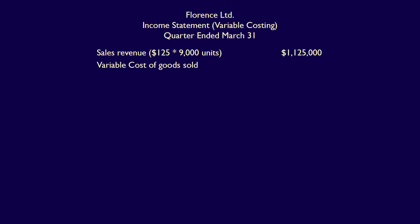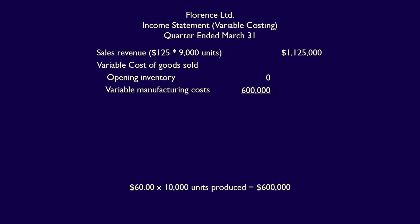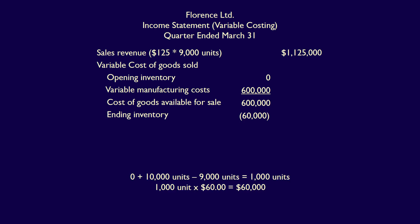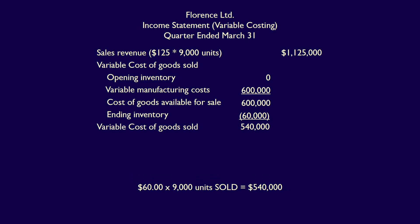We then calculate the Variable Cost of Goods Sold. Opening inventory is zero because it was a new product. Add in the variable manufacturing costs, calculated as 10,000 units multiplied by $60 per unit, which equals $600,000. Adding opening inventory of zero plus variable manufacturing costs of $600,000 gives us $600,000 as the cost of goods available for sale. Next we deduct ending inventory: starting with zero units, adding 10,000 units produced, subtracting 9,000 units sold, gives us 1,000 units in ending inventory. 1,000 units multiplied by $60 equals $60,000 in ending inventory. $600,000 minus $60,000 equals $540,000 variable cost of goods sold — equivalently, 9,000 units sold multiplied by $60 also equals $540,000.